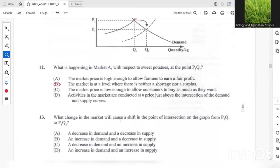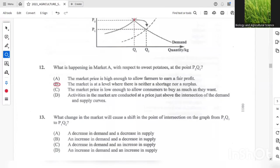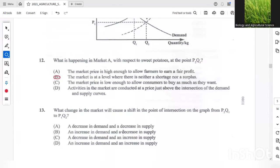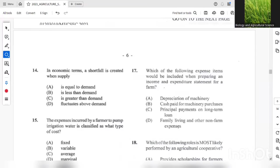What change in the market will cause a shift in the point of intersection on the graph P2Q1. In other words, what will cause this line to move from this location to here? So definitely we have an increase in supply and an increase in the demand. So D would be the most suitable answer. Question 14. In economic terms, a shortfall is created when the supply is less than the demand. So B should be the answer.